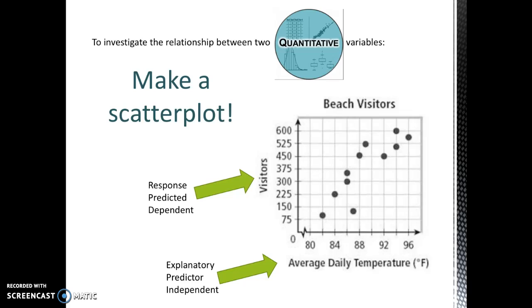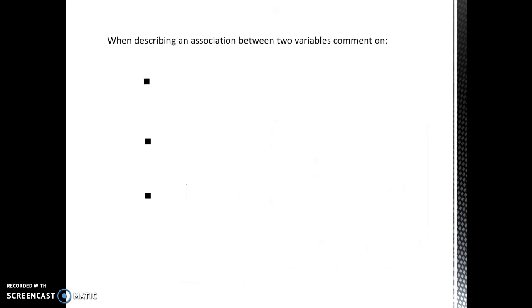From the scatterplot, we have an idea as to how the two variables are moving together. You can see that as the average daily temperature increases, the number of visitors to the beach generally is increasing as well.